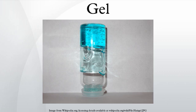A gel is a solid, jelly-like material that can have properties ranging from soft and weak to hard and tough. Gels are defined as a substantially dilute cross-linked system which exhibits no flow when in the steady state.